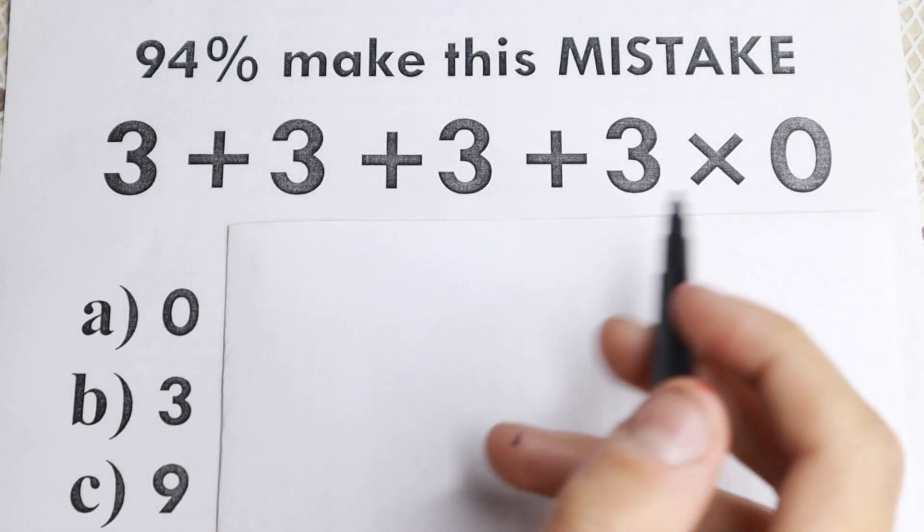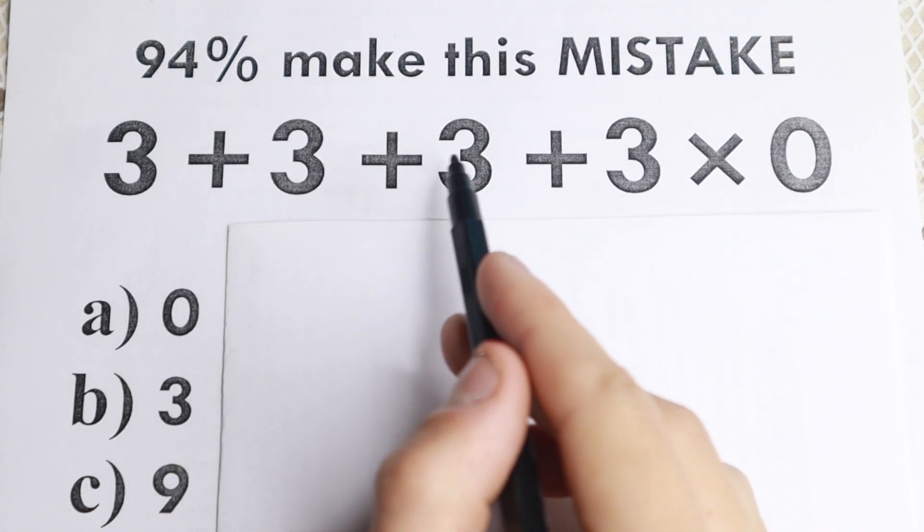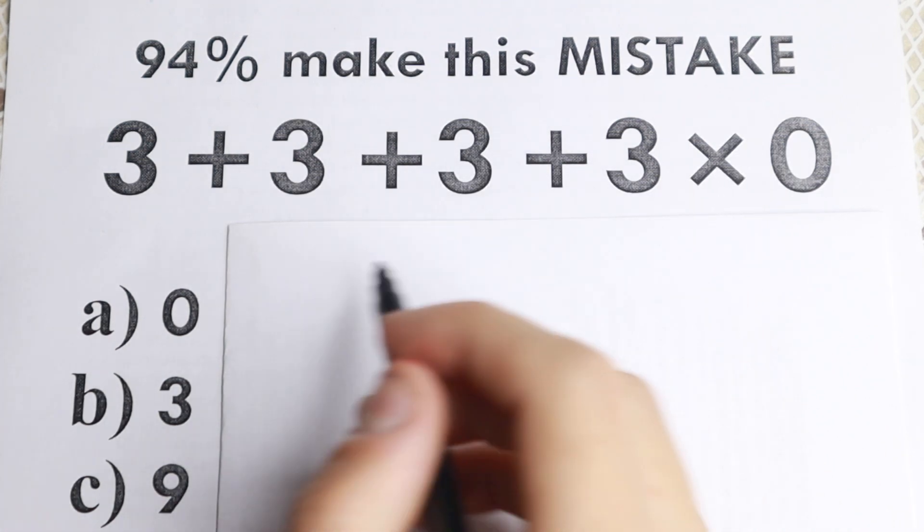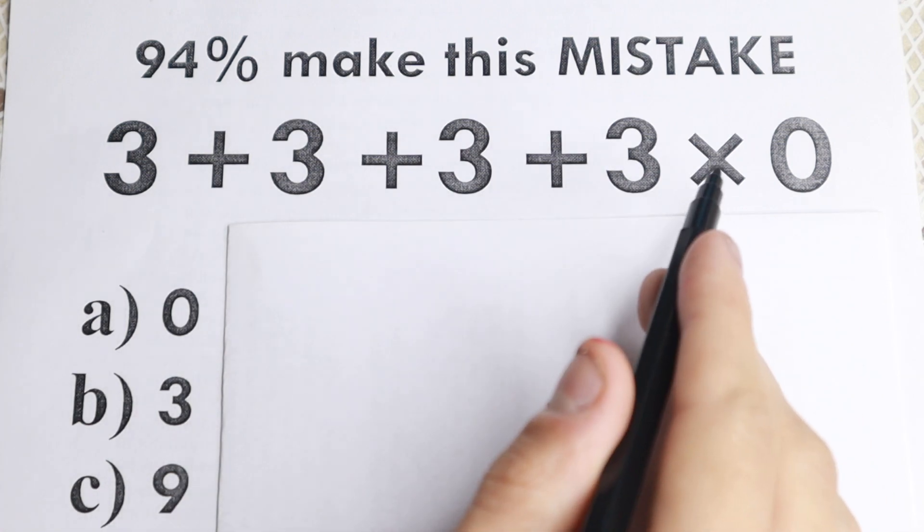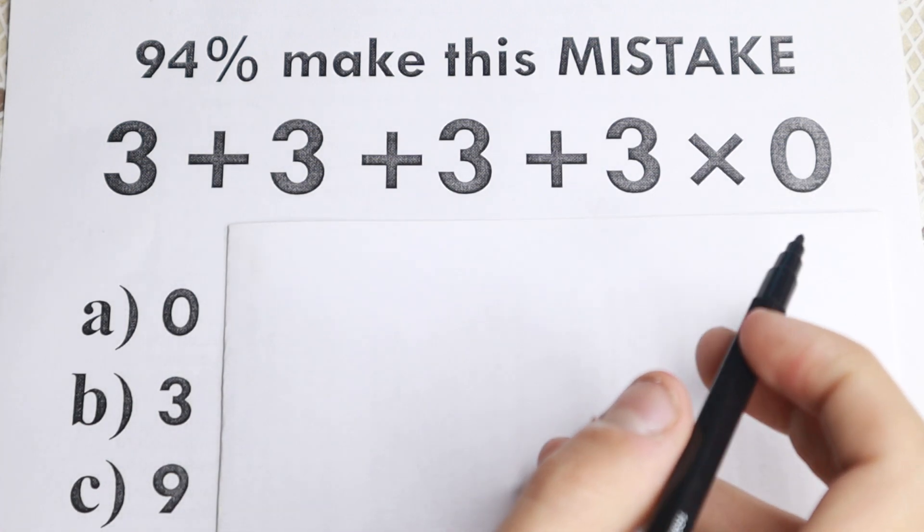So here is a problem. I don't want you to use your calculator: 3 plus 3 plus 3 plus 3 times 0. So no huge number, just 3, just addition, multiplication and 0. So what is the correct answer?